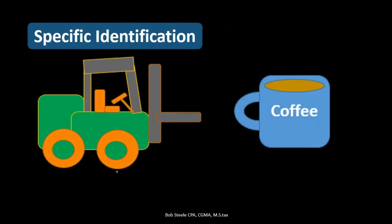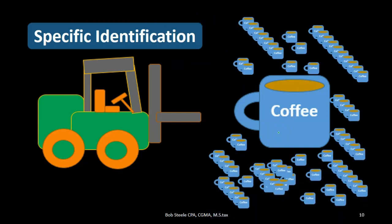If we were selling something completely the same in large quantities — like coffee mugs — specifically identifying all of them might not be worth our time. We wouldn't want to track exactly which coffee mug we sold. If we have small identical items, we might want to use an estimating method. Those estimating methods will be things like first in first out, the average method, and last in first out, which we'll talk about next.